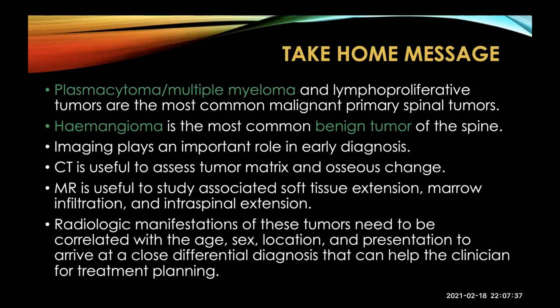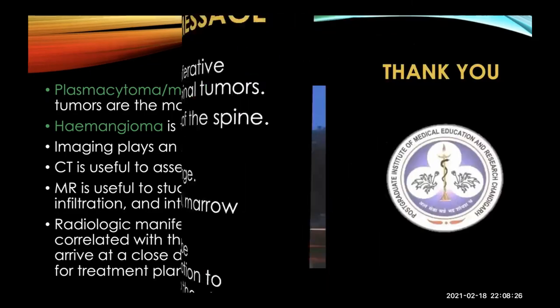The take-home message: plasmacytoma and multiple myeloma are the most common malignant primary spine tumors, while hemangioma is the most common benign tumor. Imaging is very important — get an X-ray, CT scan, MRI, and if possible a PET scan; bone scans are also invaluable. All these tumors can involve the vertebral body, infiltrate the marrow, and cause intraspinal extension. Most importantly, you must correlate imaging findings with the patient's age, sex, location — anterior or posterior elements, cervical or thoracic spine — and keeping all these factors in mind will give you, if not a definitive, then a close working diagnosis of the tumor type.